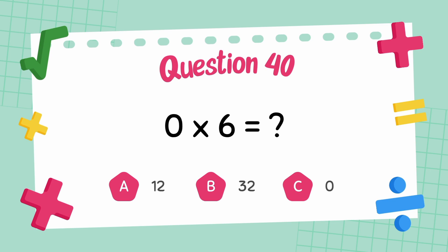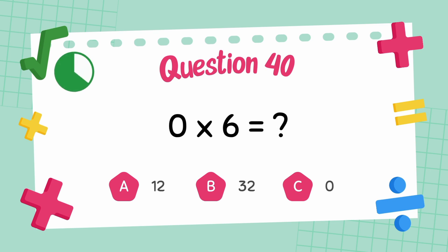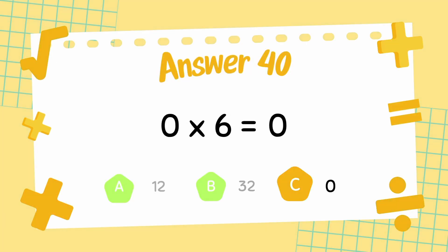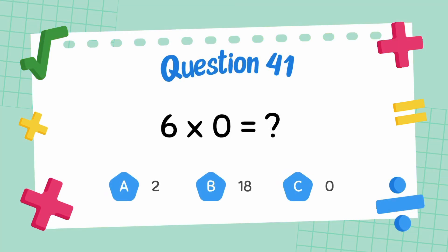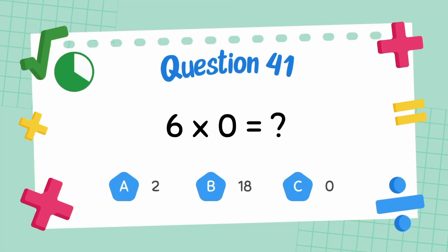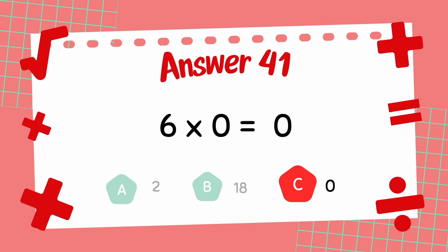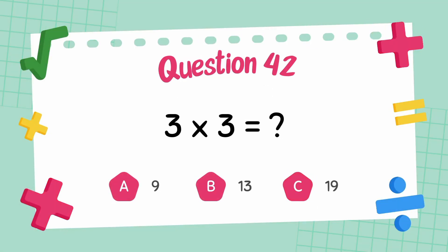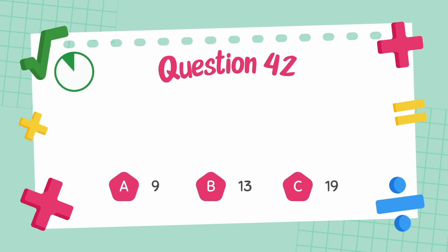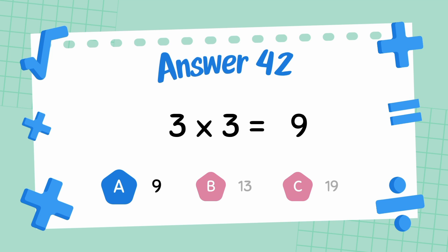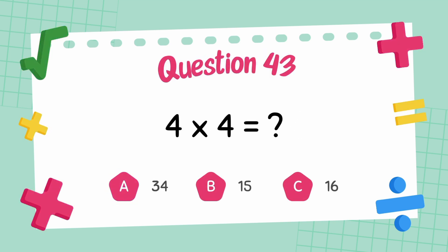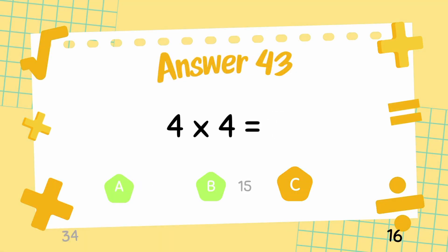What is 0 multiply 6? The answer is 0. What is 6 multiply 0? The answer is 6. What is 6 multiply 3? The answer is 9. What is 4 multiply 4? The answer is 16.